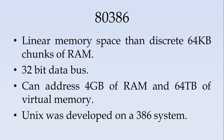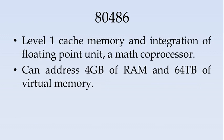It was on a 386 system that Unix was developed. Next, the 80486 set of processors introduced level 1 cache memory, integration of a floating point unit, and a math coprocessor. Cache memory is used for speeding up memory access to RAM — it is a temporary memory, and level 1 cache is part of the processor itself. The 80486 had a floating point unit integrated, whereas in 8086 a separate coprocessor was needed. It can address 4 GB of RAM and 64 TB of virtual memory.